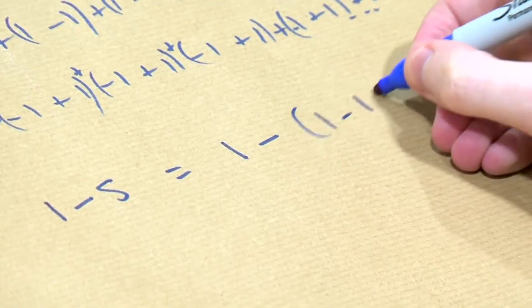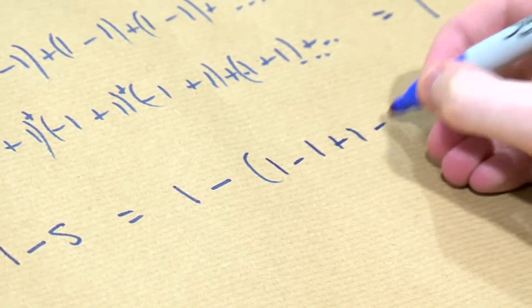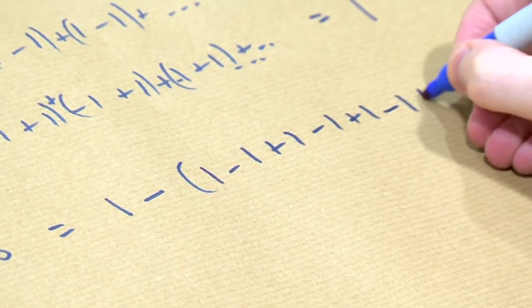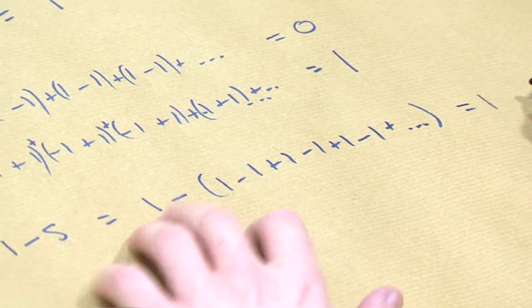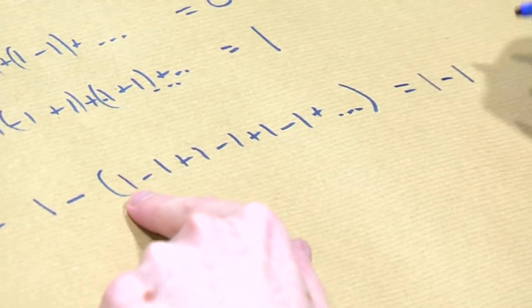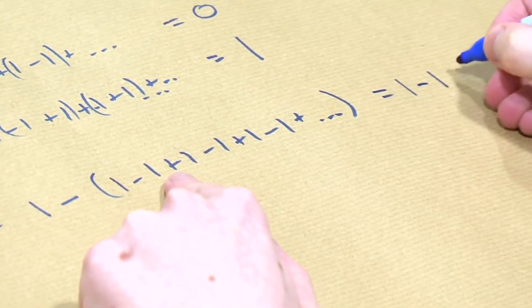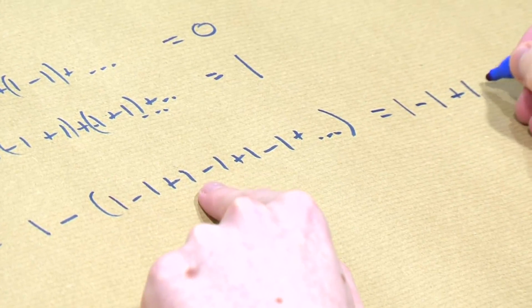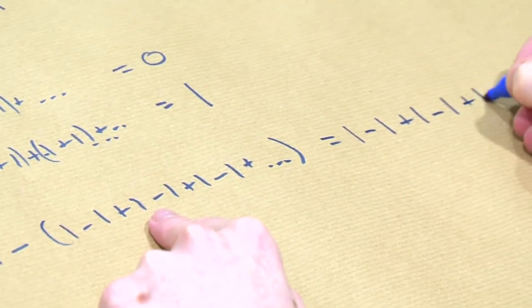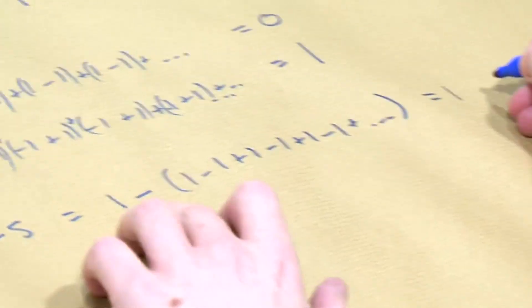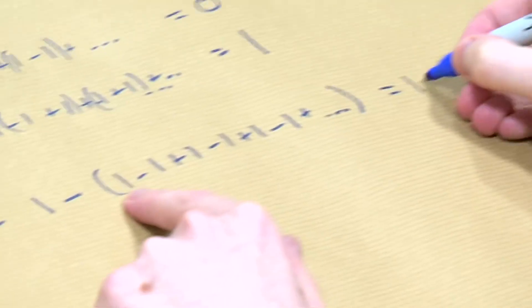So now this is equal to: plus 1, minus 1, plus 1, minus 1, plus 1, minus 1, plus 1, minus 1, plus 1, minus 1. That's a weird answer.